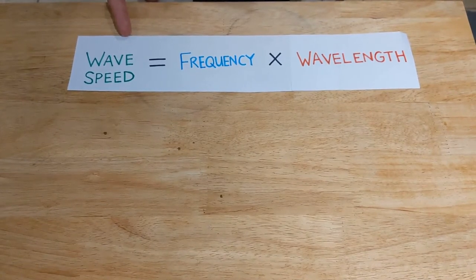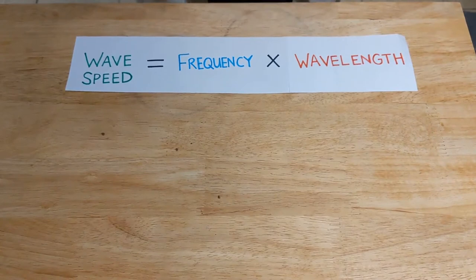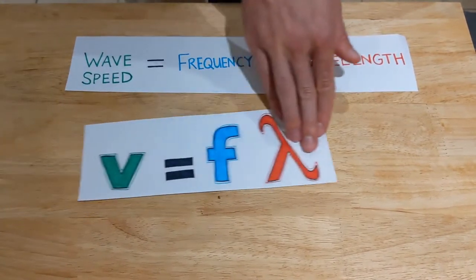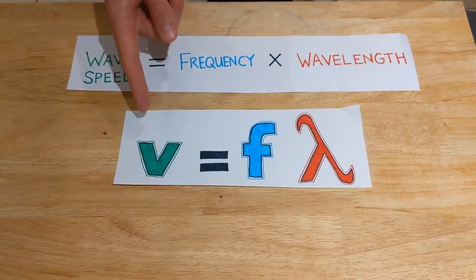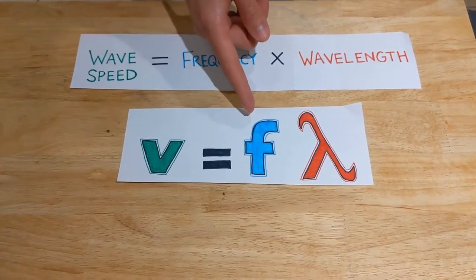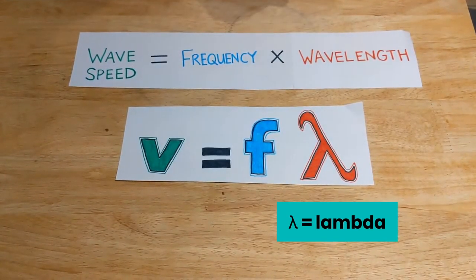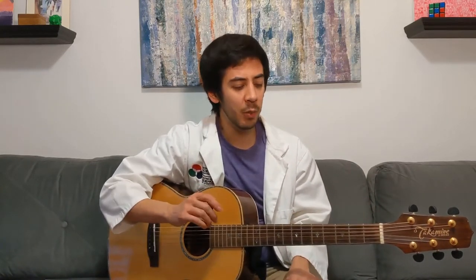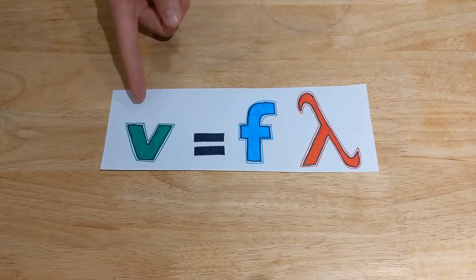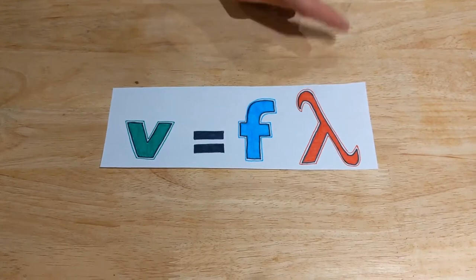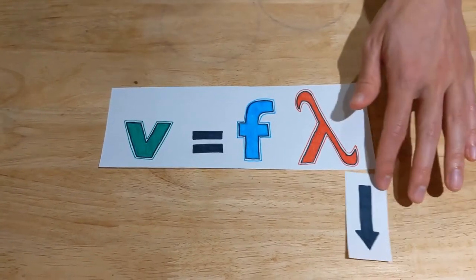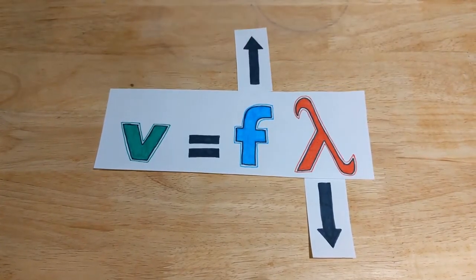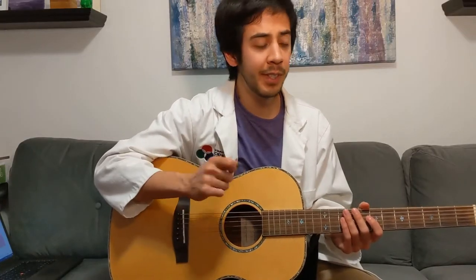Frequency is an important property of sound, but it's not the only one. That brings us to an important equation: the speed of a wave is equal to the frequency of vibration times its wavelength. You'll usually hear this as v equals f lambda, where v is the speed or velocity of the sound wave, f is its frequency, and wavelength is represented by the Greek letter lambda. We can see this in action on the guitar: shortening the string decreases the wavelength, and since v equals f lambda and the speed of sound isn't changing, decreasing the wavelength increases the frequency, which our ears interpret as a higher pitch.